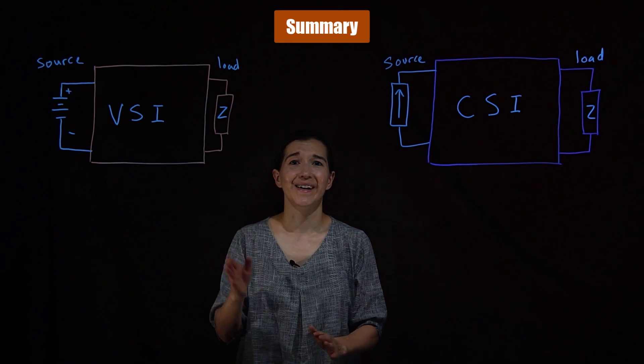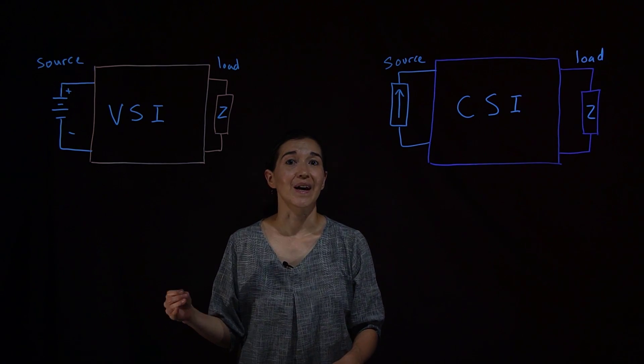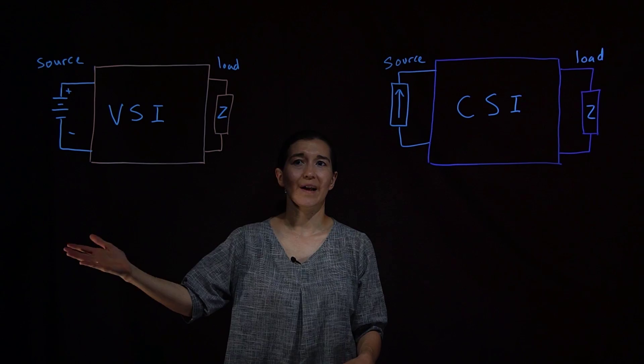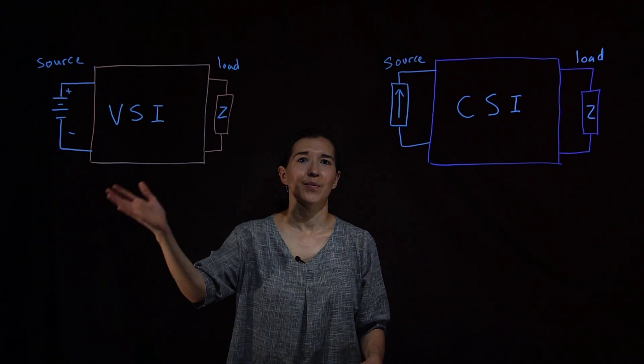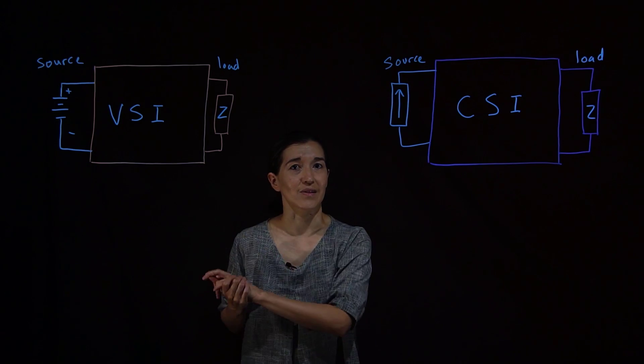So quick summary: voltage source inverter, the source is assumed to be more like a voltage source. The inverter then puts positive negative voltages over the load and the current is determined by the characteristics of the load.